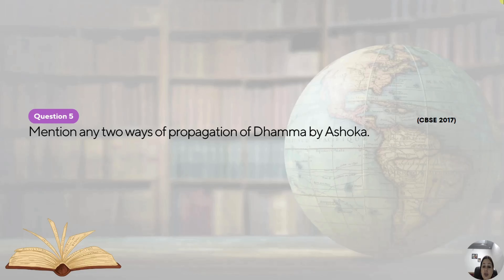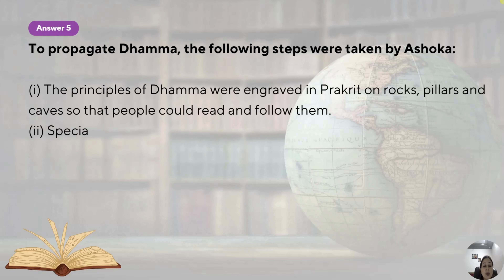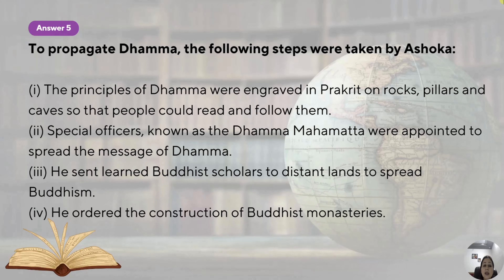Mention any two ways of propagation of Dhamma by Ashoka — this question came in the year 2017. Dhamma basically refers to all the moral values and code of conduct which one needs to follow as per Ashoka. It was an amalgamation of different religions. After the Battle of Kalinga, Ashoka's life was completely transformed. After he saw the violence and devastation brought by the Kalinga war, he decided not to be on the path of violence anymore and became non-violent thereafter. He then propagated Dhamma — a code of conduct and moral values collectively known as Dhamma.